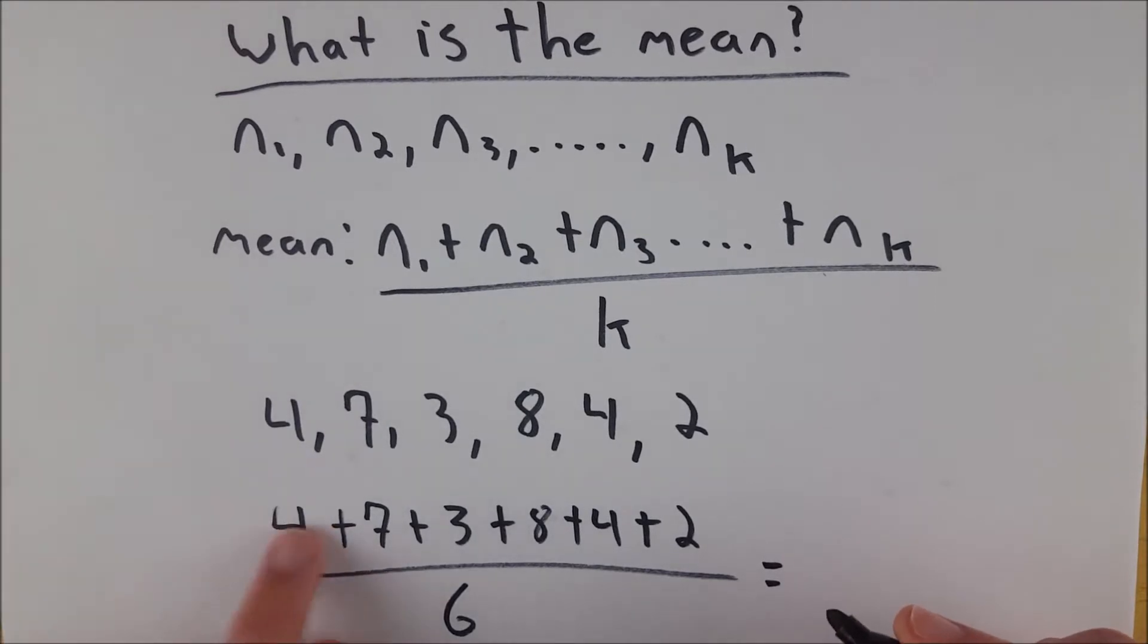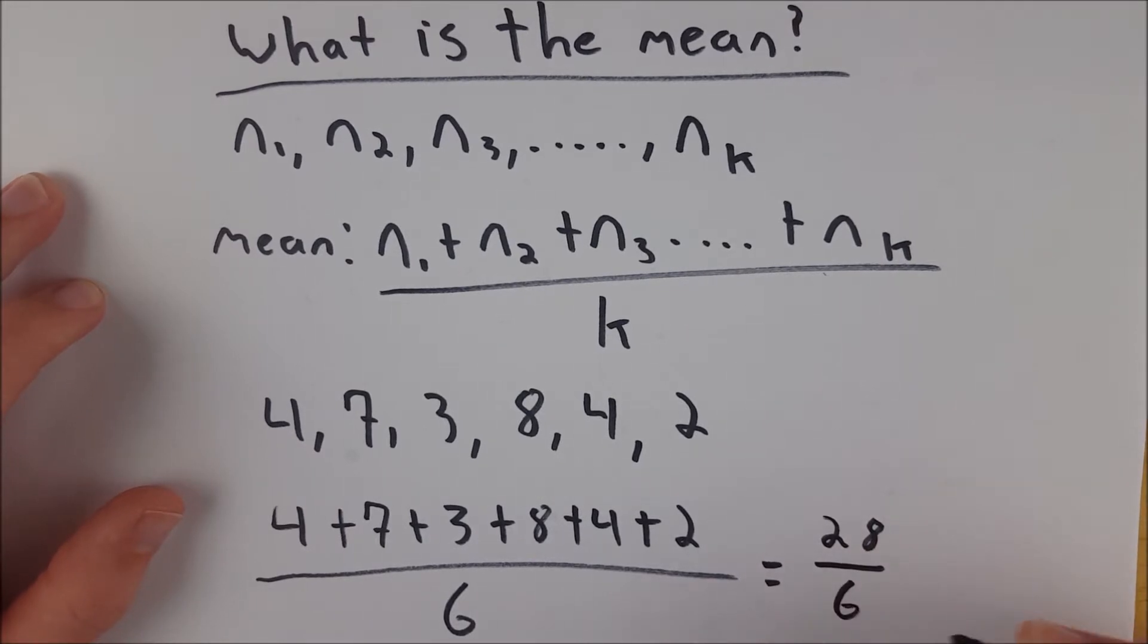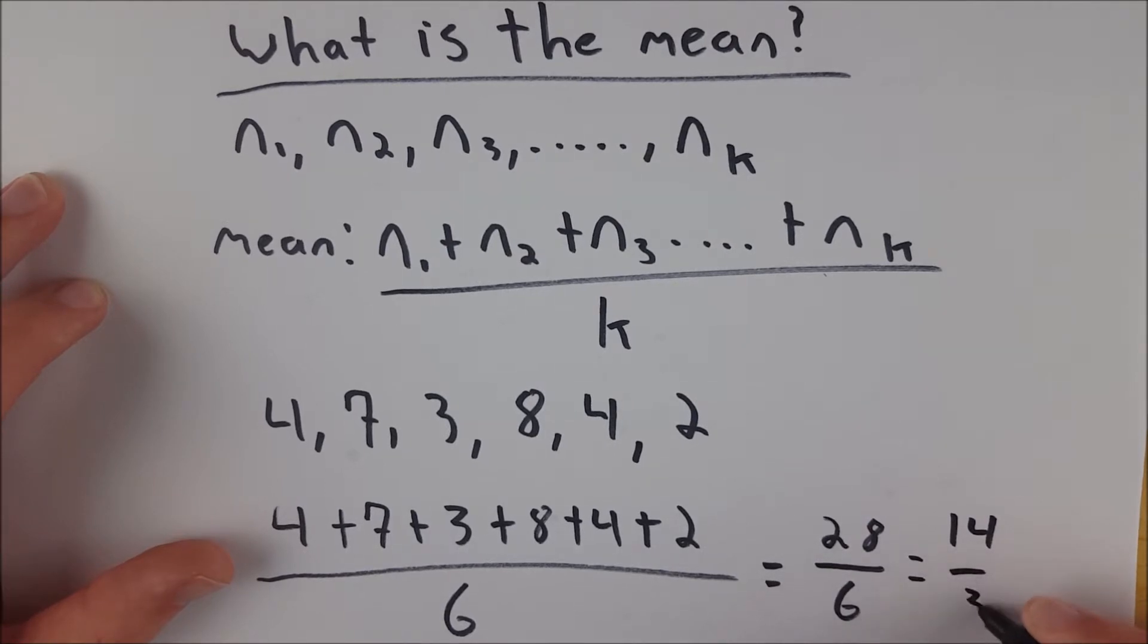So then, four plus seven is 11, plus three is 14, plus eight is 22, plus four is 26, plus two is 28. So we are left with 28 divided by six. And so if we reduce this fraction, we get 14 divided by three.